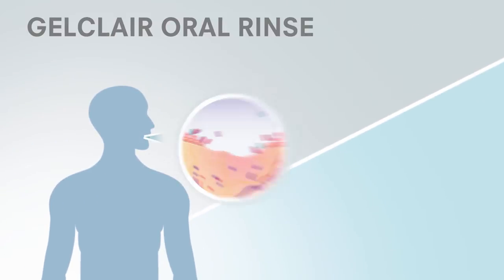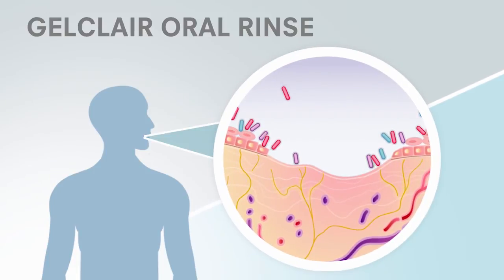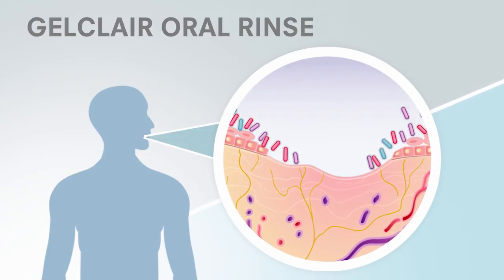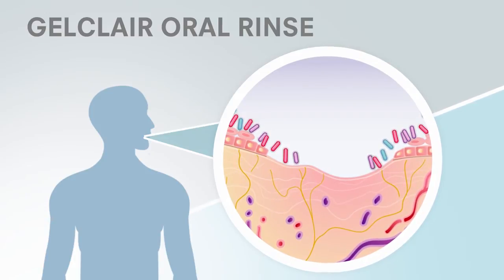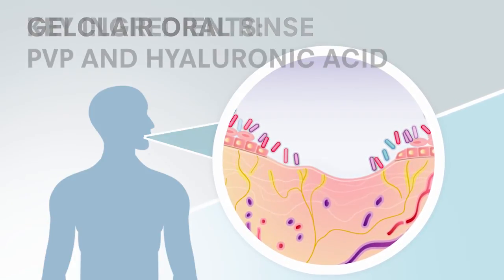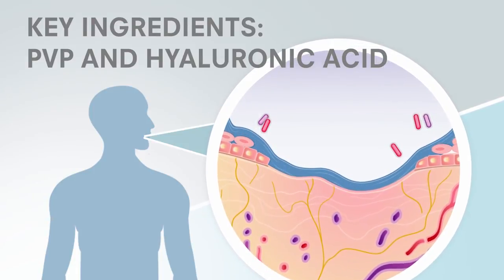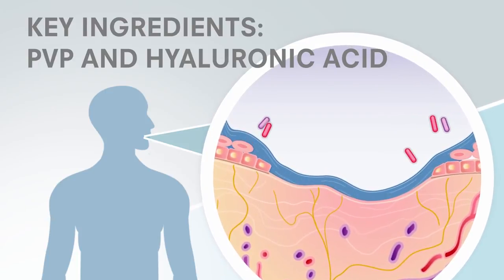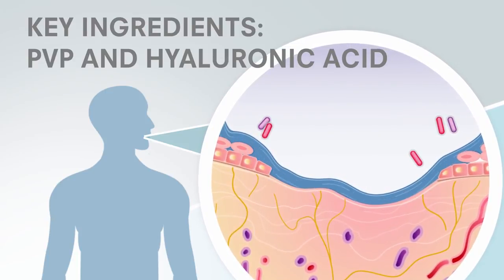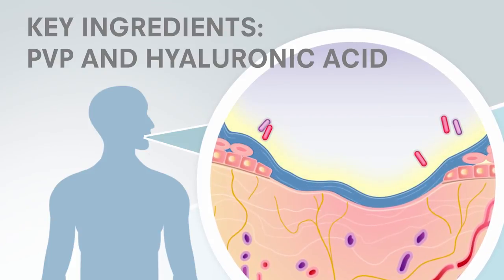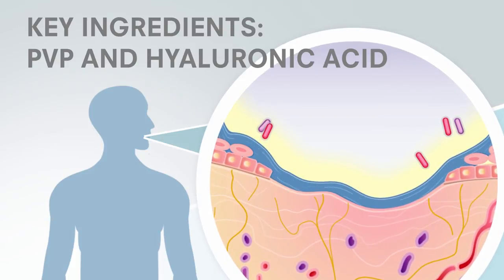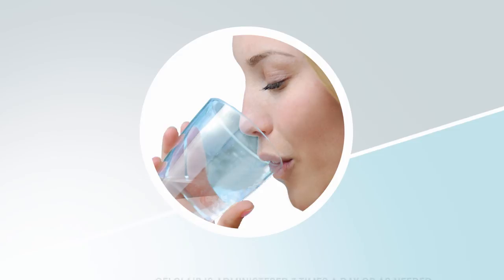Relief of symptoms, including pain and the ability to swallow, can be accomplished with help from a number of treatment options. GelClair is a unique bioadherent oral rinse gel containing polyvinylpyrrolidone, or PVP, a hydrophilic polymer with mucoadherent and film-forming properties which enhances tissue hydration. PVP helps relieve pain by creating a protective barrier over exposed nerve endings in the mouth, making them less sensitive. The other main ingredient in GelClair is hyaluronic acid, which coats the oral mucosa and enhances tissue hydration via its action as a molecular sponge.